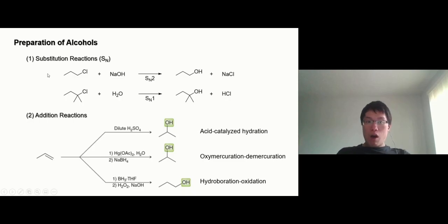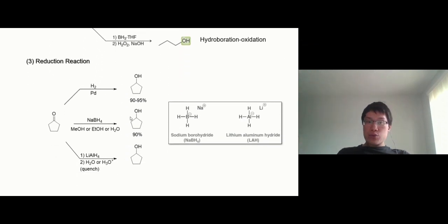To make an alcohol we can do substitution reactions or addition reactions on an alkene. You can control the ratio of selectivity using these reagents. And we can do a reduction reaction of ketone or aldehyde. So that's why we have to talk about the oxidation number earlier.